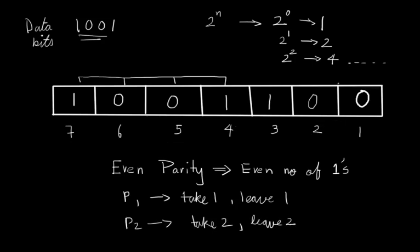For p2 you take 2 and leave 2. So starting from 2, you take into consideration 2 and 3, leave out 4 and 5, take into consideration 6 and 7.